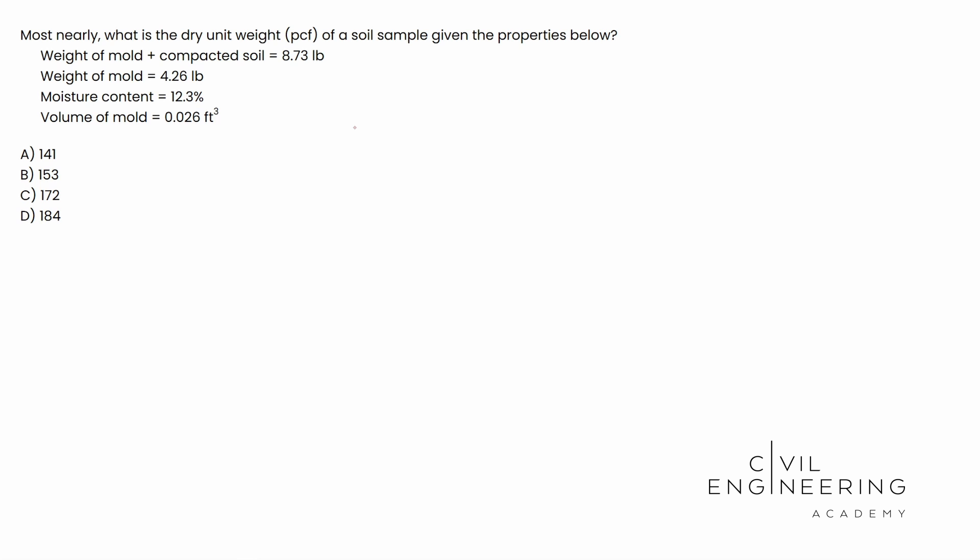All right, so today we have a materials problem, and in particular, we're going to be talking about some soil properties. Here's what the question says. Most nearly, what is the dry unit weight in pounds per cubic foot of a soil sample given the properties below? It gives us the weight of the mold plus the compacted soil, the weight of the mold, moisture content of that soil, and the volume of the mold. We see our four options available to us. Notice they don't have units. They included it in the problem. So you might see that on the exam too, where they won't include units in the answer bank, but they will in the problem. Pay attention to the problem statement.